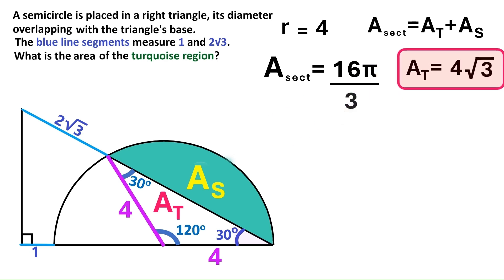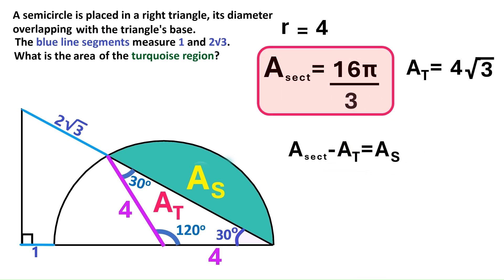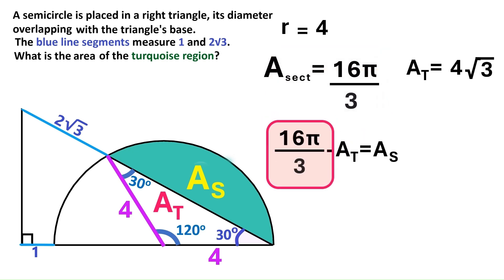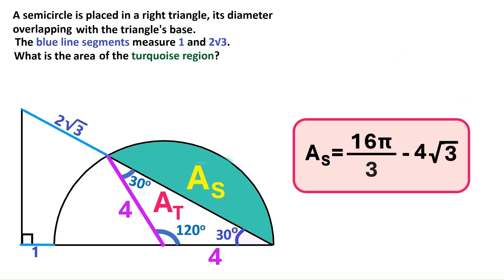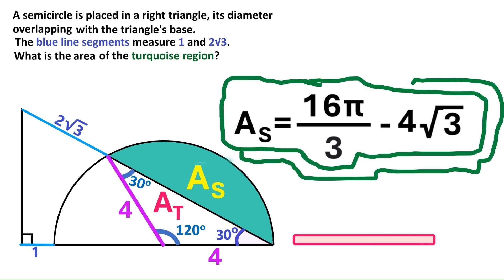Let's move this piece of information to here. Next we'll use this equation. We know area of the sector equals area T plus area S. Now we can take this area T and move it to the left hand side and it gets a minus sign. Area of the sector is this. So let's put that value here. And area T is this. So let's also put that value into the equation. And we get the answer to our problem. The area of the turquoise region is 16 pi over 3 minus 4 times radical 3. So that's it people, we found the area we needed to find.